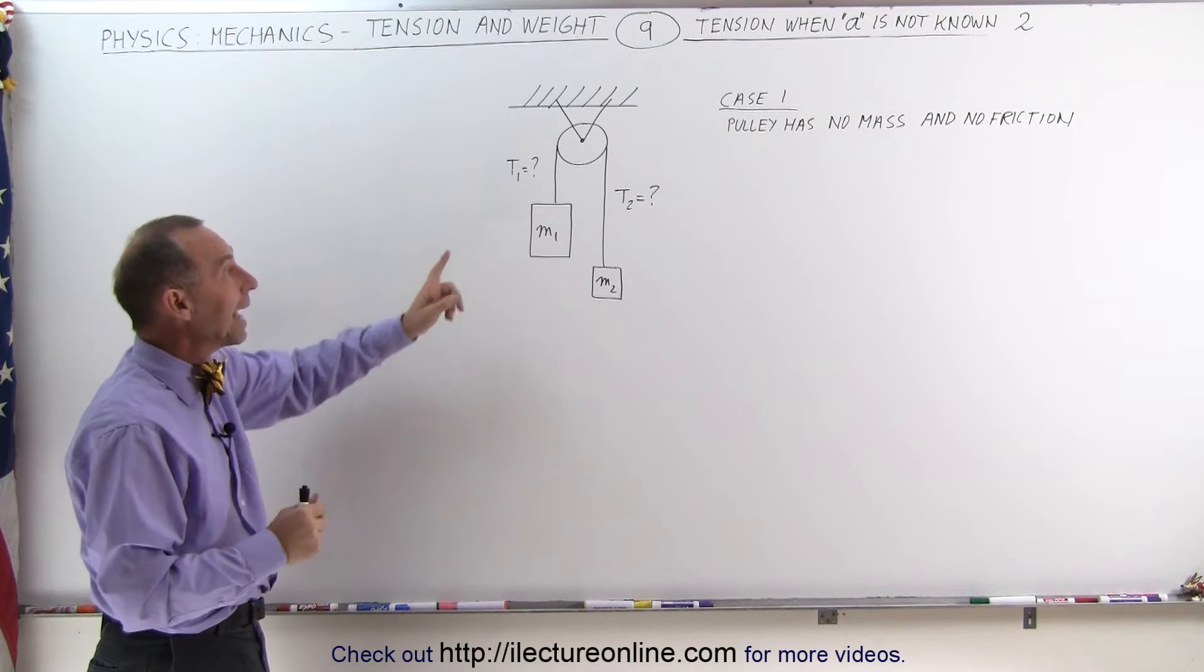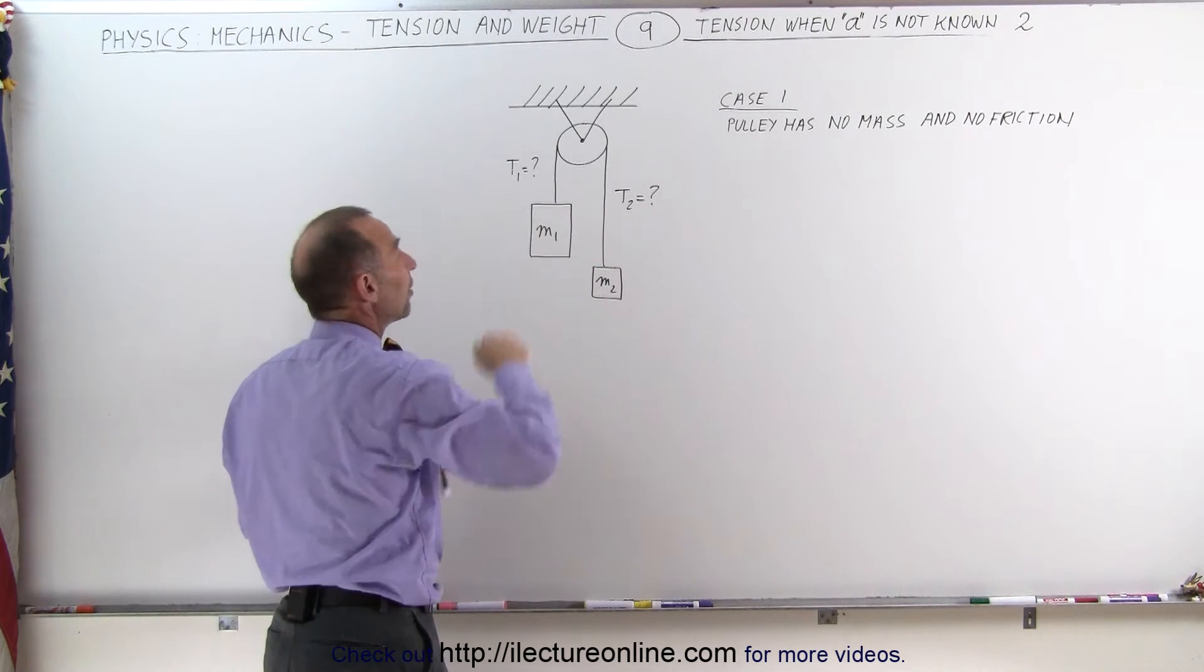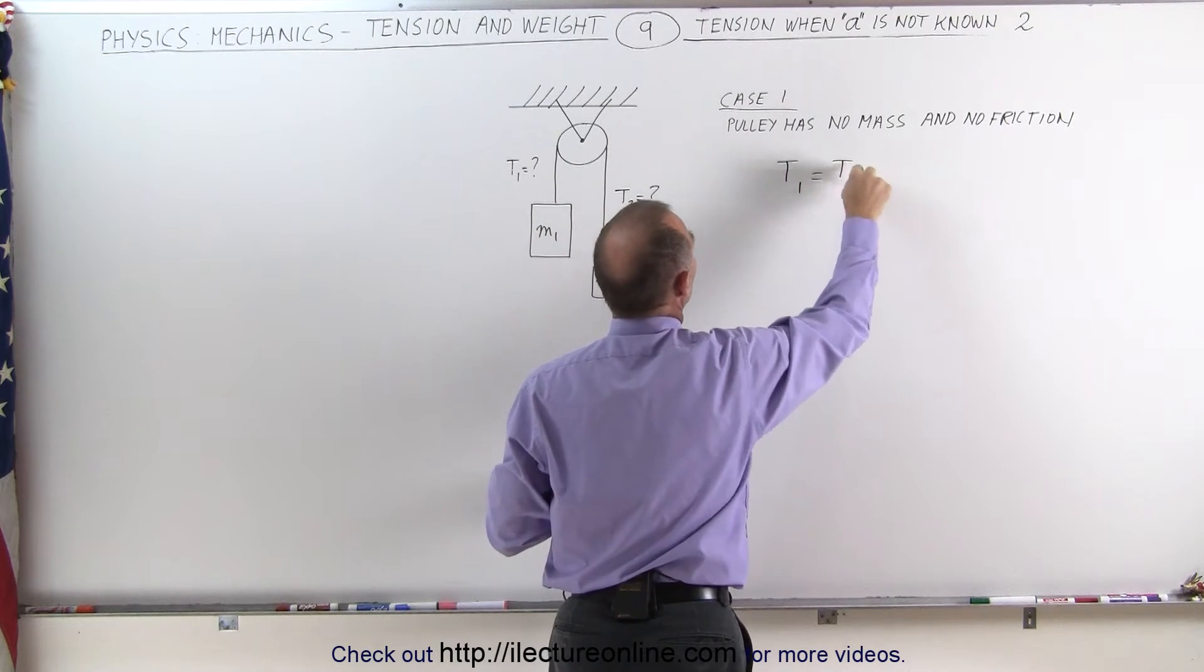But if the pulley has no mass and no friction, just like in the previous video we can assume that T1 must equal T2. T1 equals T2.